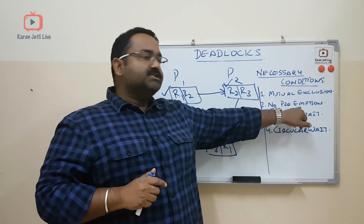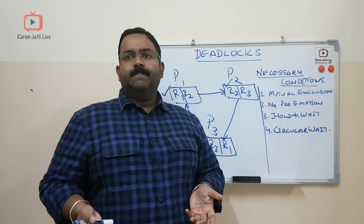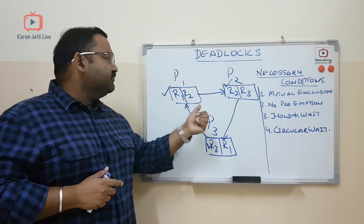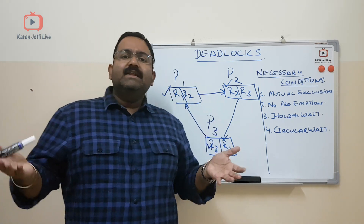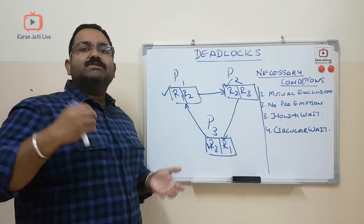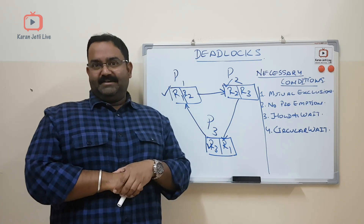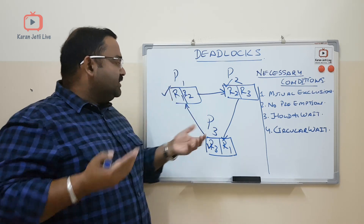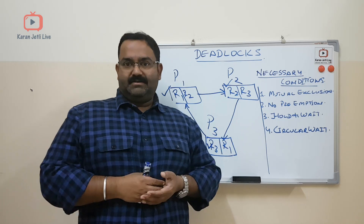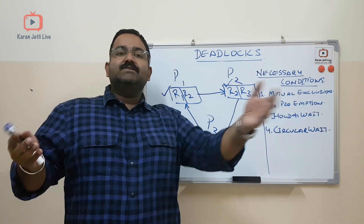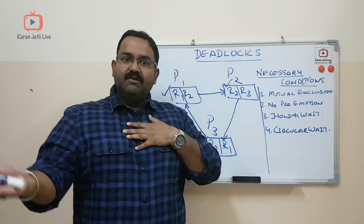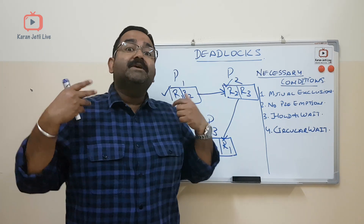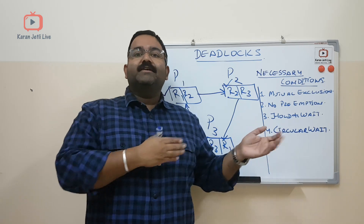The second condition required for a deadlock is no preemption. Process P1 has resource R1 and it is waiting for R2. While it is waiting for R2, it could release R1, but it is not releasing it. If it releases R1, then R1 can be used by P3 and the deadlock will break. But no preemption means: one process is having one resource and is waiting for some other resource, and while waiting, it is not releasing its currently held resources. It is not preempting itself from the presently allocated resources.